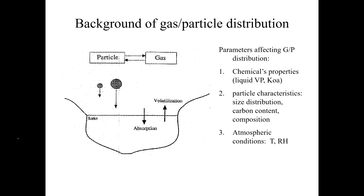The parameters that affect gas-particle partitioning include the physical and chemical properties of the chemical — their liquid vapor pressure and KOA (octanol-air partition coefficient) are the two key parameters. It also depends on particle characteristics: their size distribution, how much carbon they have, whether they're made of organic carbon, soot carbon, or mostly water. Other factors like atmospheric temperature and relative humidity are also important.